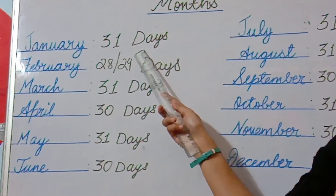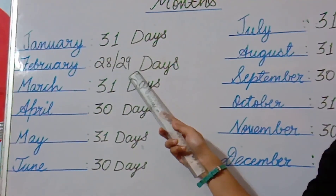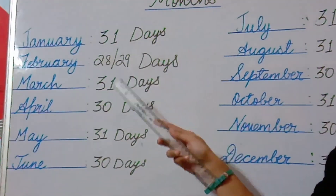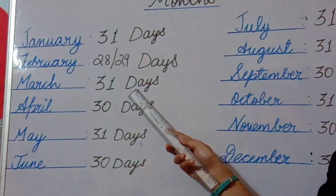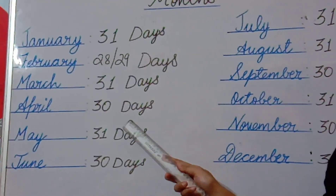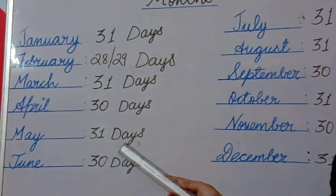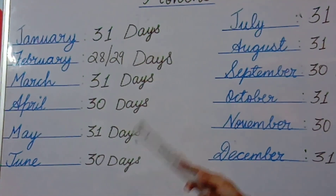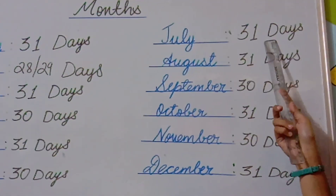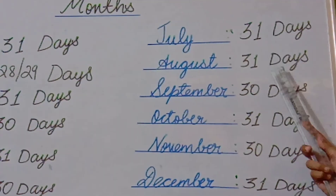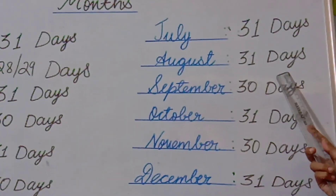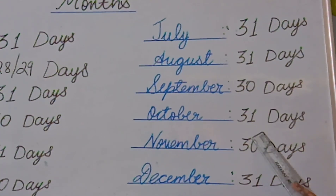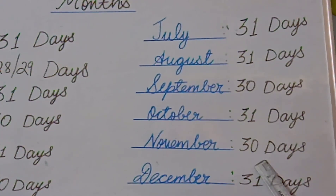Thirty-one days in January. Twenty-eight or twenty-nine days in February. Thirty-one days in March. Thirty days in April. Thirty-one days in May. Thirty-one days in June. Thirty-one days in July. Thirty-one days in August. Thirty days in September. Thirty-one days in October.